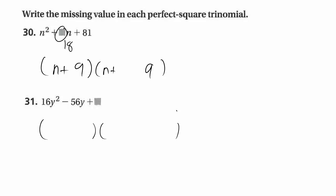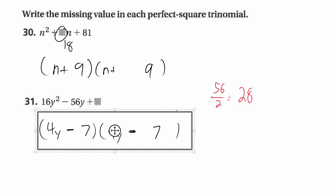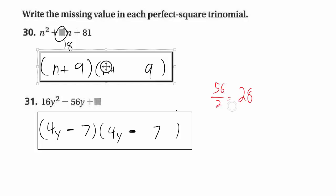For the next perfect square trinomial, we have a 4 and a 4, particularly 4y and 4y. We're given the middle term but not the end. If you remember that the middle term comes from this number times this number doubled, you can reverse engineer it: take the middle number, divide by 2 to get 28, so 4 times 7 is 28. Since there's a negative in the middle of a perfect square trinomial, both signs will be minuses. Dividing the middle term by 2 and figuring out what to multiply gives the answer.